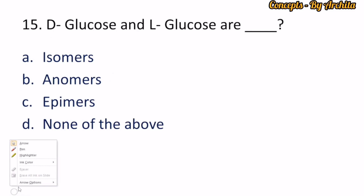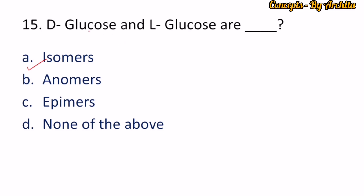The last question: D-glucose and L-glucose are — the options are isomers, enantiomers, and epimers. D-glucose and L-glucose are mirror images of each other, so we also call them enantiomers. The correct option is option A, isomers. D-glucose is the naturally occurring sugar.